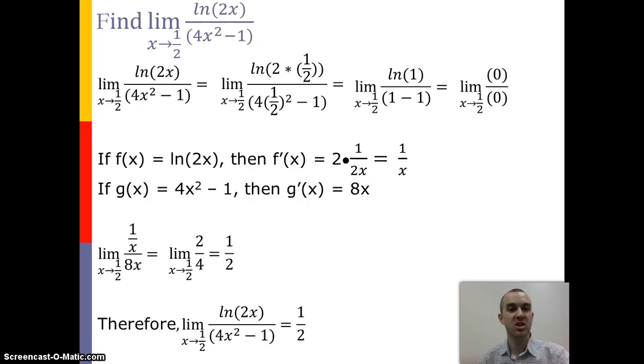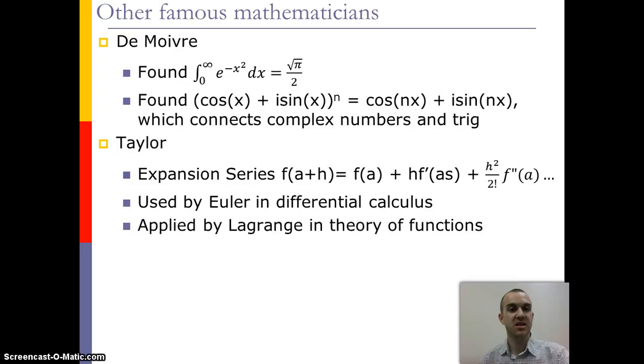So two other famous mathematicians at the time were de Moivre, who looked at the integration of e raised to the negative x squared being equal to the square root of pi over 2, when you're integrating from 0 to infinity, as well as looking at the concepts of what happens when we start integrating complex numbers into trigonometry.